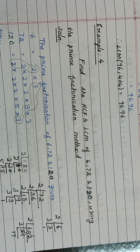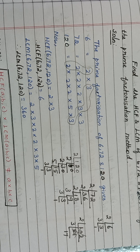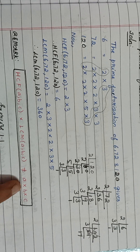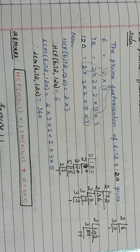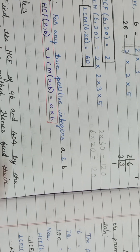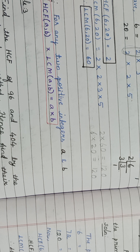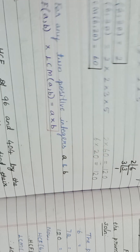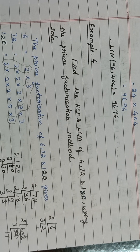If three numbers are given, the HCF of the three numbers into the LCM of the three numbers will not be equal to A × B × C. The condition HCF × LCM = product of the numbers is satisfied only for two numbers. If three numbers are given, this condition will not satisfy, so you have to go for the prime factorization method.